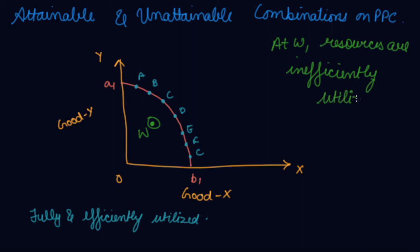So, why will you not utilize your resources fully? You will utilize your full resources in order to produce good X and good Y. So, here the resources are inefficiently utilized. So, the combination cannot be here according to the PPC.